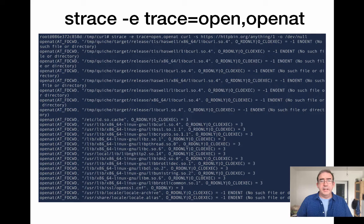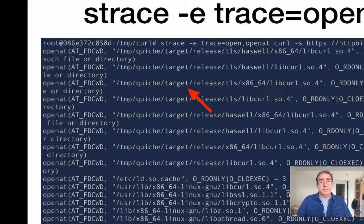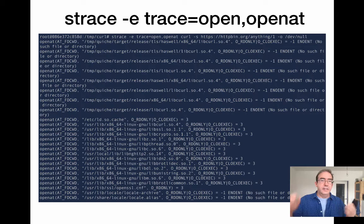With strace, you can supply the -e flag to just list out the trace events for openat. When I did that — aha! I was using a version of curl I built that was referencing the HTTP 3 library quiche. I hadn't actually built that, so curl was looking for it and obviously getting an error. Useful.